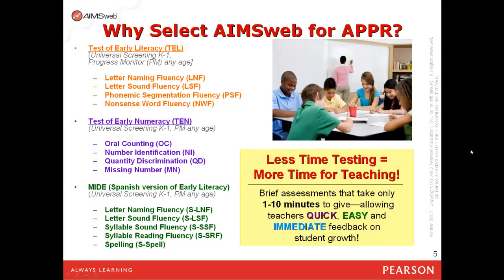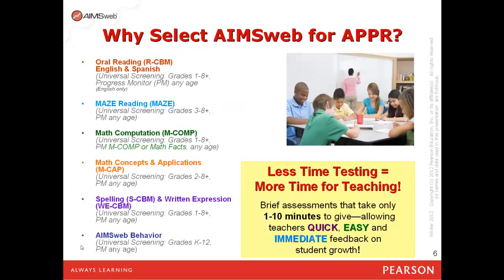Each of the tests for early literacy, early numeracy, or MIVE have four or five subtests. You may use any or all of those subtests to meet your data requirement needs. We also offer oral reading, MAIS (a silent reading measure), math computation, math concepts and applications, spelling and written expression, and behavior.